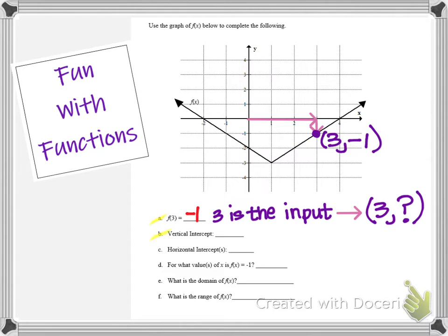Now we're being asked to find the vertical intercept. We know the vertical intercept is a point on the y axis, which means we're looking for an ordered pair 0 comma something. The x value is 0, but we don't know the y value. Looking on my graph, I can see on the y axis the graph is crossing at (0, -2). Make sure you're always writing intercepts as ordered pairs — one of the numbers should be 0. For the vertical intercept, it is (0, -2).